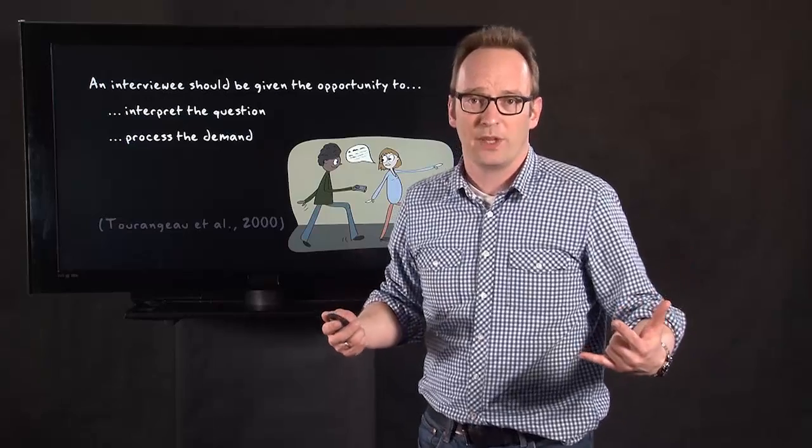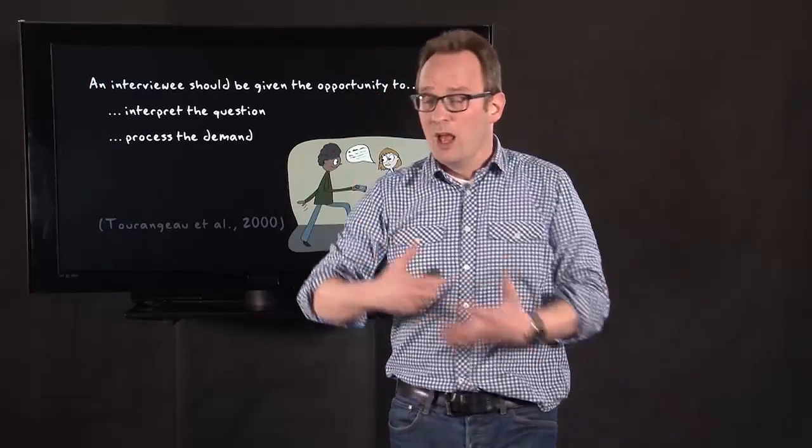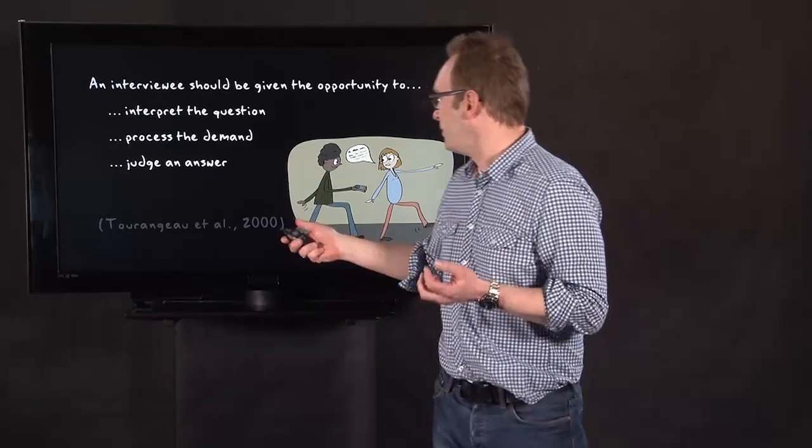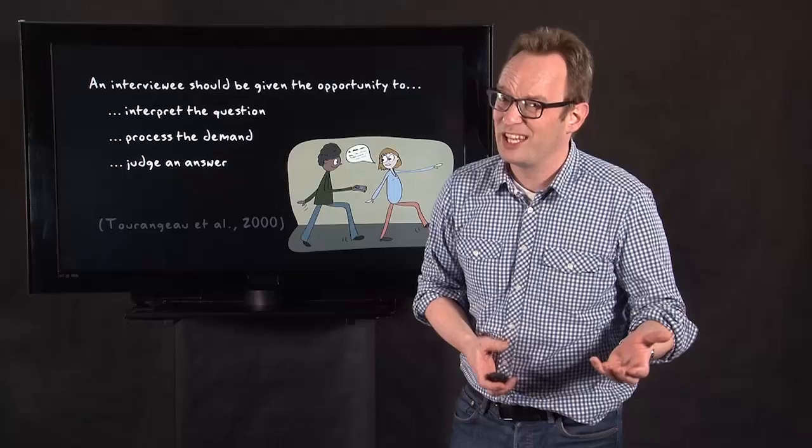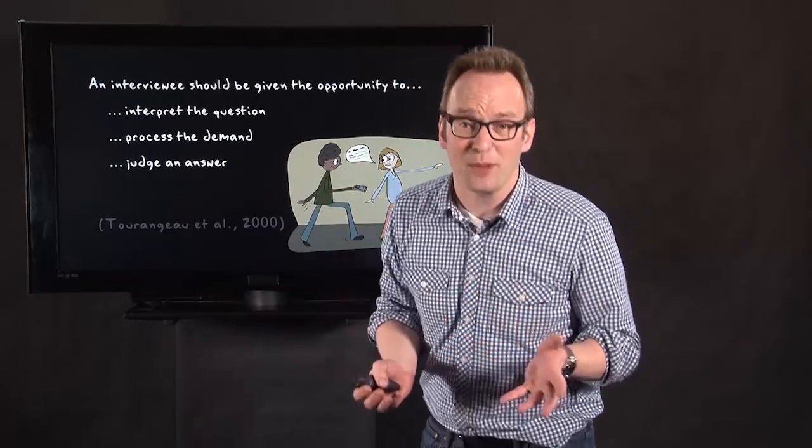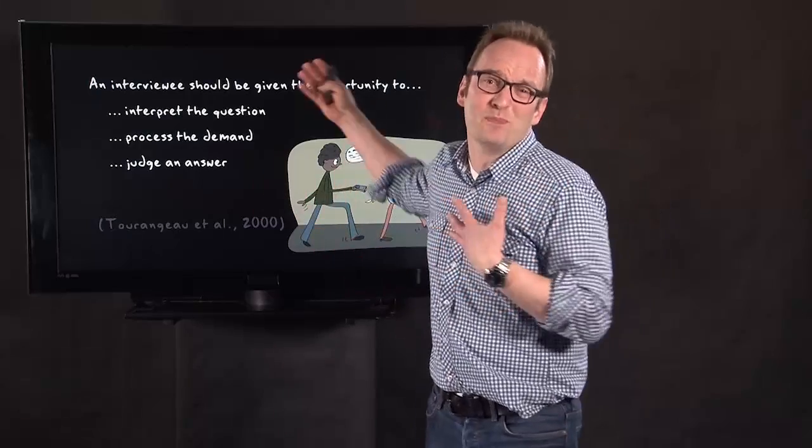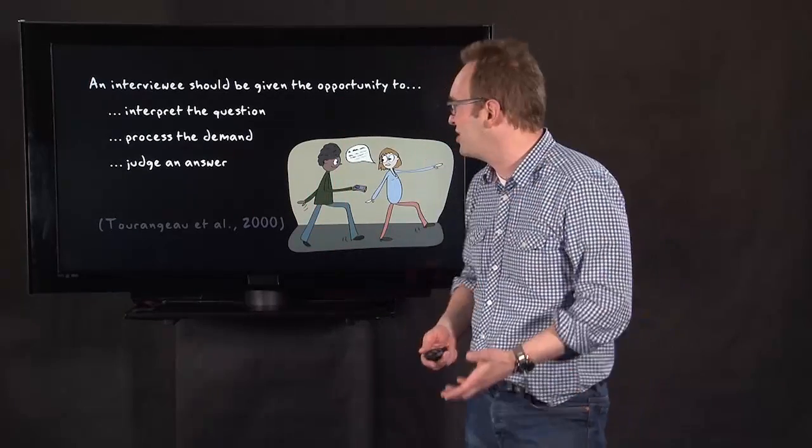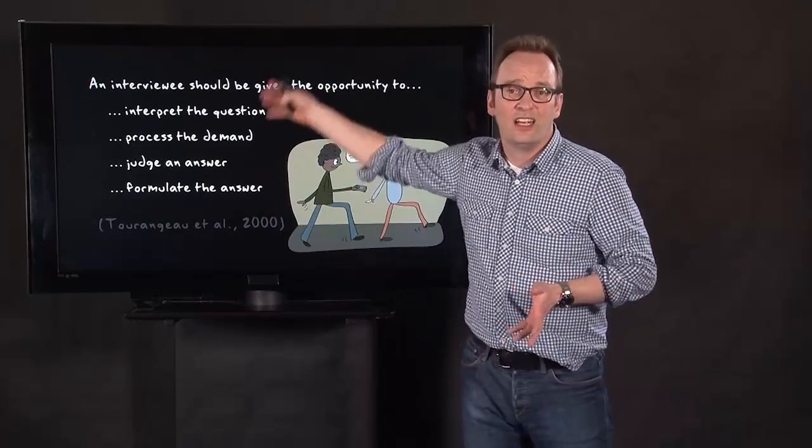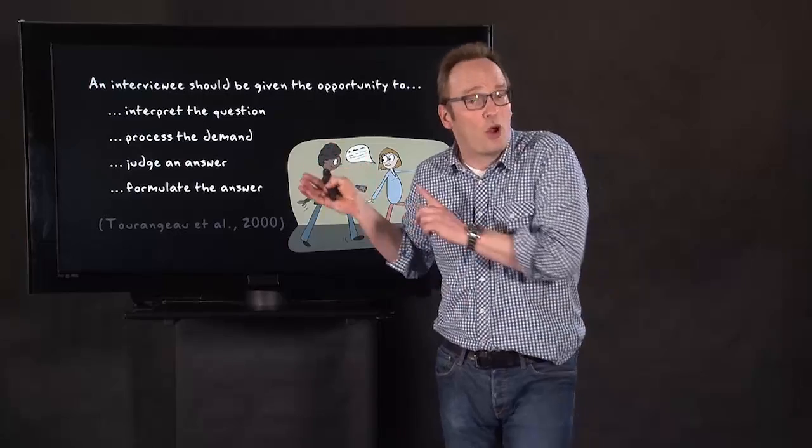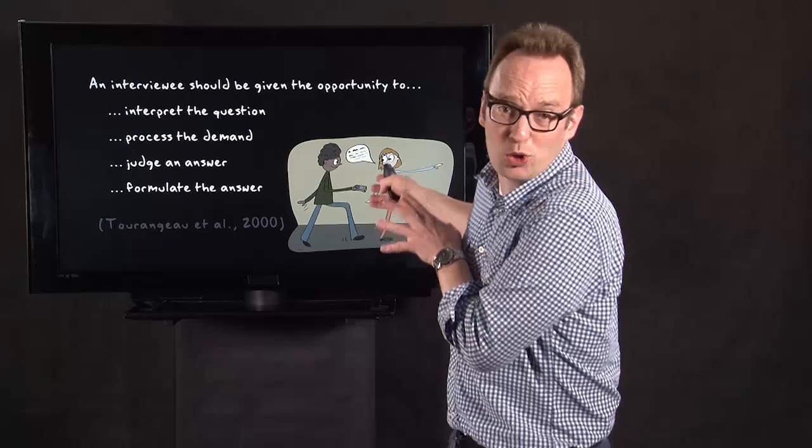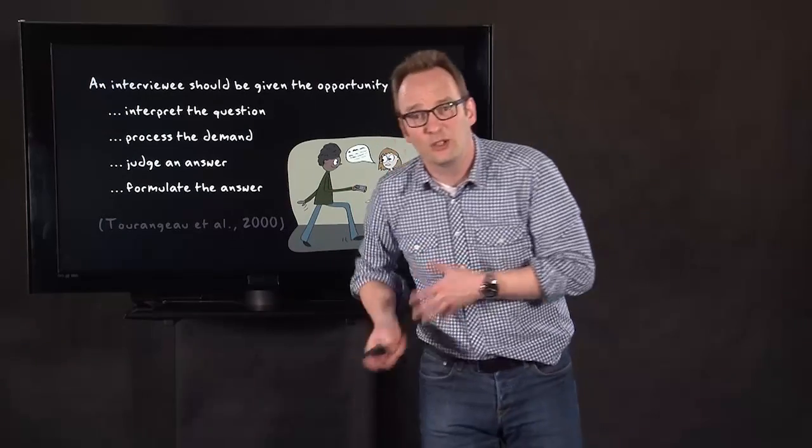Process the demand. Is it something from the heart, from the brain, from my past? What is it? What does the interviewer want, is an interviewee thinking? And then judge the answer. Do I really want to tell this? Isn't this too private or too weird or something? Or is this really what was meant? So, you have to judge as an interviewee. You have to judge the answer. And then, in the end, you have to formulate the answer. And all this could go wrong. Anywhere, things could go wrong. So, as an interviewer, you should give the space and possibility to an interviewee to do this, to take these steps.